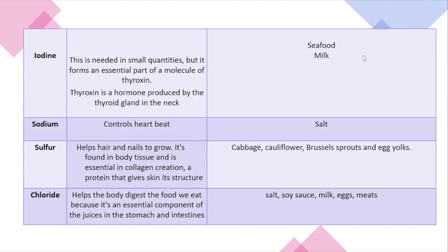Next we have chloride. Chloride helps the body to digest the food we eat because it is an essential component of the juices in the stomach and intestine. So chloride is naturally found in our digestive system and helps food to digest. It is commonly found in salt, soy sauce, milk, eggs, and meat. When you're done, please type 'done.'